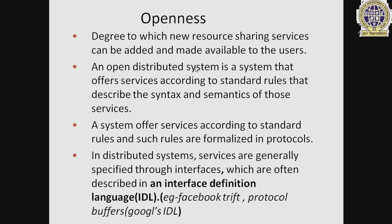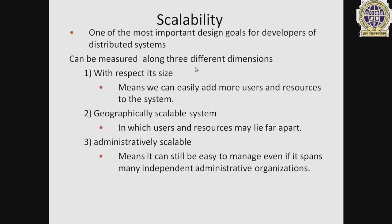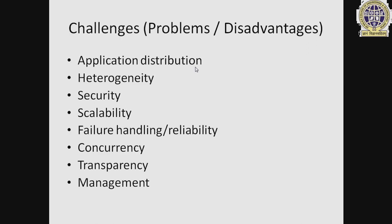For example, Facebook's gRPC protocol buffers use IDL. Scalability is one of the most important design goals for a distributed system developer. It can be measured along three different dimensions: number one, with respect to size — meaning we can easily add more users and resources to the system; number two, geographically scalable — in which users and resources may lie far apart; number three, administratively scalable — meaning it can still be easy to manage even if it spans many independent administrative organizations.